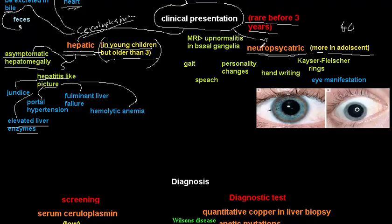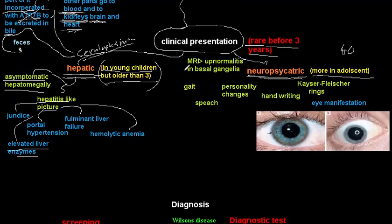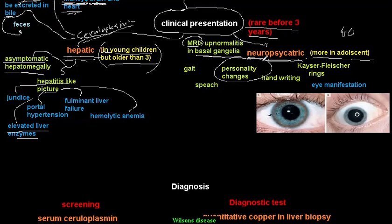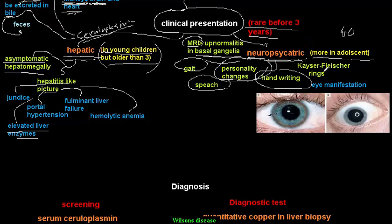For neuropsychiatric manifestations, copper accumulates in the basal ganglia and thalamus, which can be seen on MRI as areas of hypointensity. Symptoms include personality changes, handwriting changes, slow speech, ataxic gait, and signs of parkinsonism such as bradykinesia and cogwheel rigidity. Psychiatric disorders like depression and bipolar disorder can also occur.